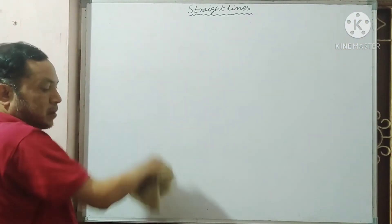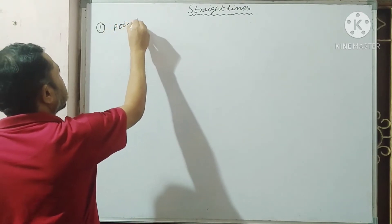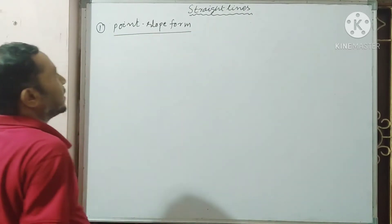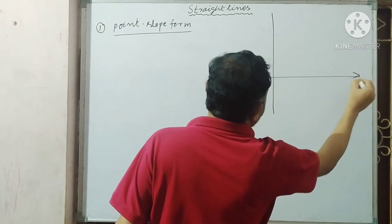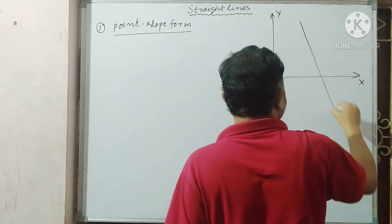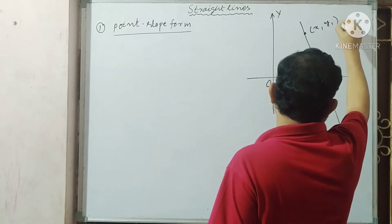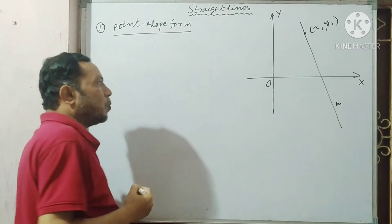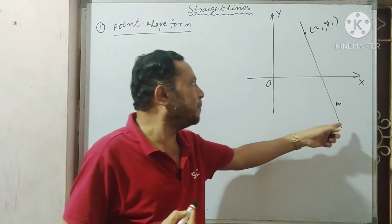Type 1 of the equation is the point-slope form — the point-slope form of the equation of straight lines. Here, this is our x-axis, this is the y-axis and origin. A straight line is passing through, and a point on the straight line is given, that is x1, y1 is a given point and the slope of the line is m. What is the locus of any point on this line?